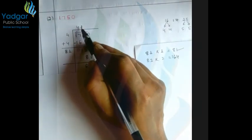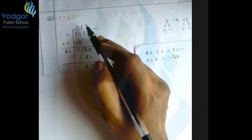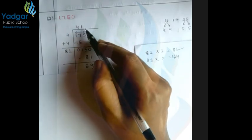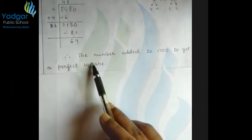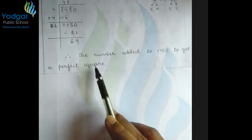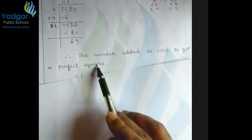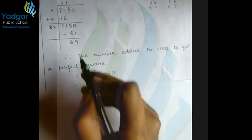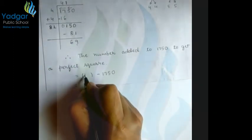You have to add 1 to the quotient. The quotient is 41. So 41+1=42. Therefore, 42 is the next number we need to square.